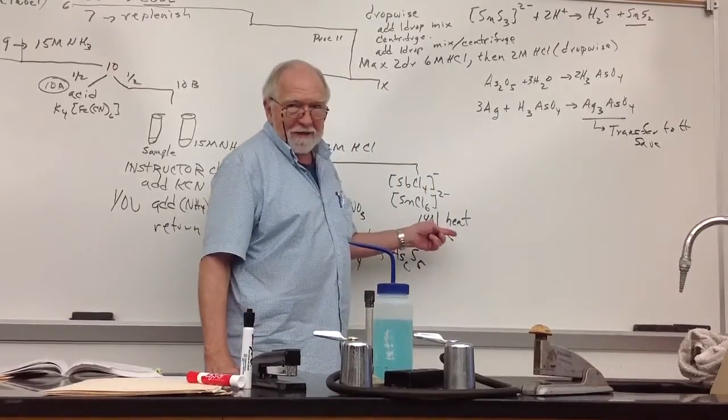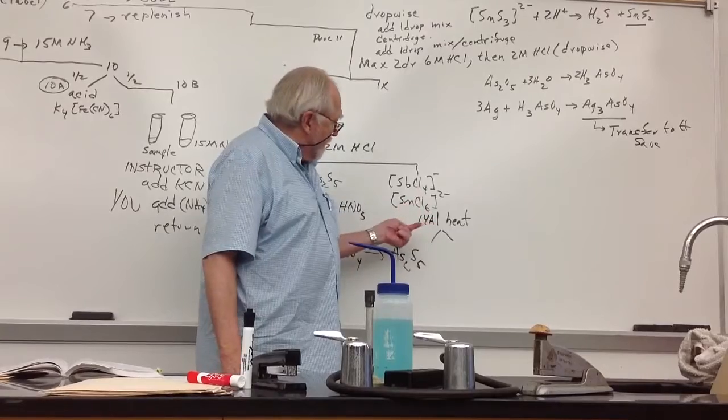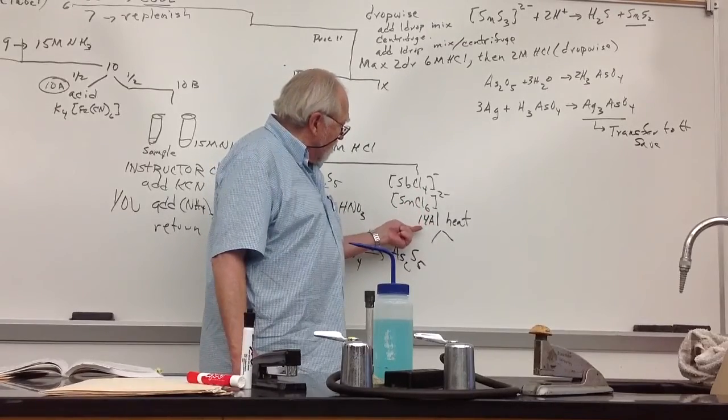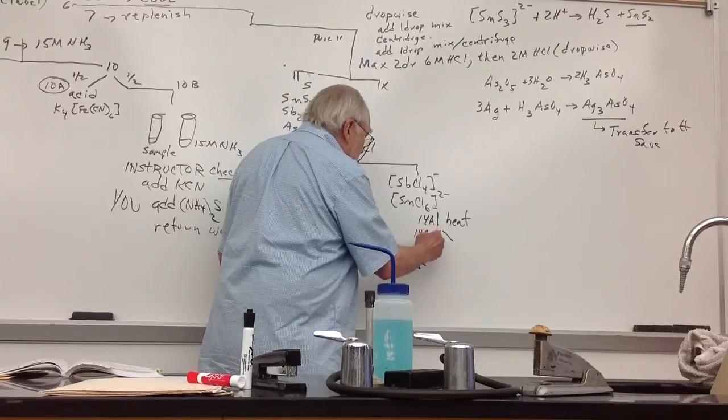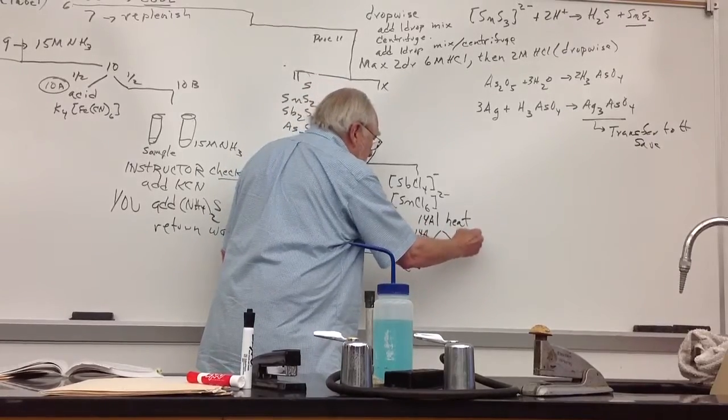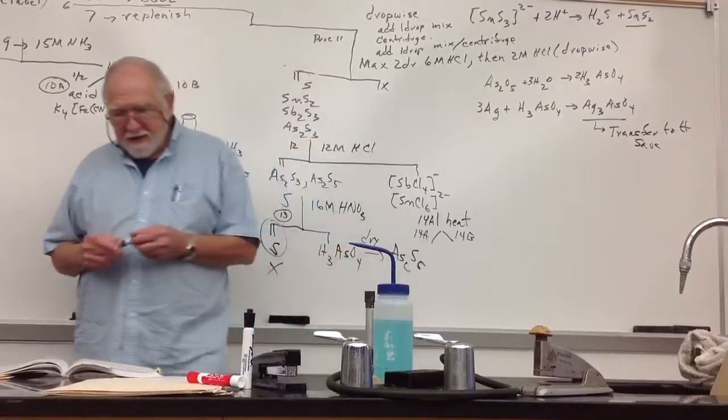Put it into a test tube, centrifuge, get rid of any precipitate that's left after you heat it in the casserole. So then you divide it into two parts for 14A, 14B. Okay. So I've got stuck right there.